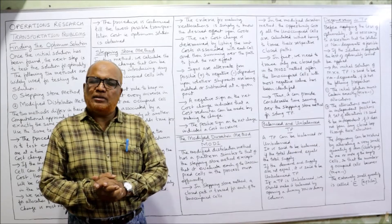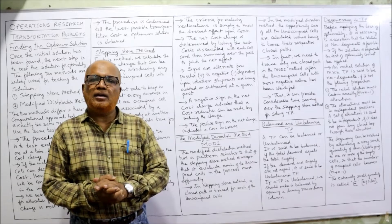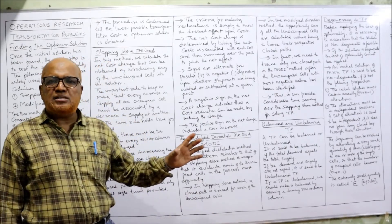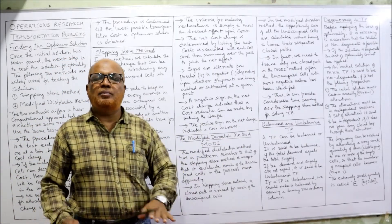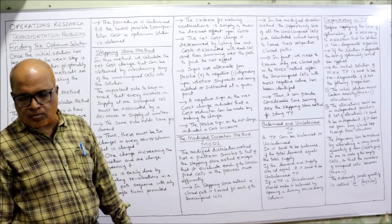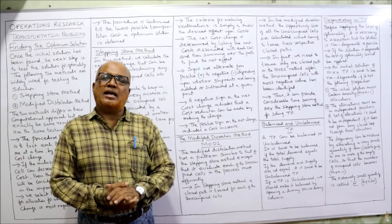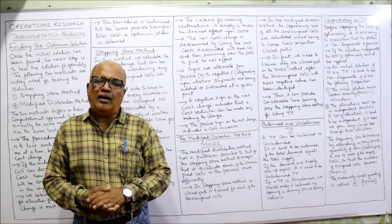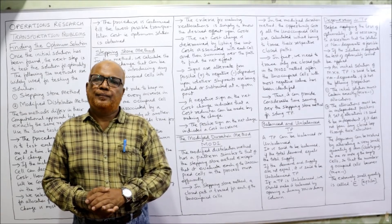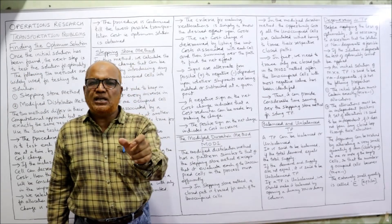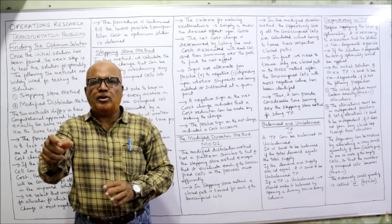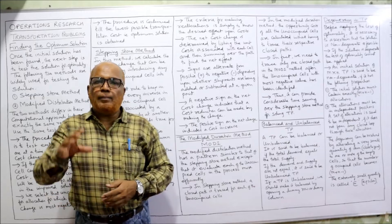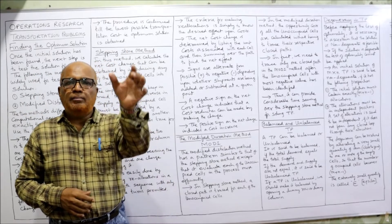Comparatively, MODI method is much more time saving because we make a loop only once after calculating opportunity costs. These two methods — stepping stone and MODI — will become very clear after doing two or three problems. Now, balanced and unbalanced transportation problems: transportation problems are classified into two categories. A balanced transportation problem is where total supply and total demand are equal. If supply and demand totals are not equal, it is called an unbalanced problem. For example, if total supply is 1000 but demand is 1200, it is unbalanced.